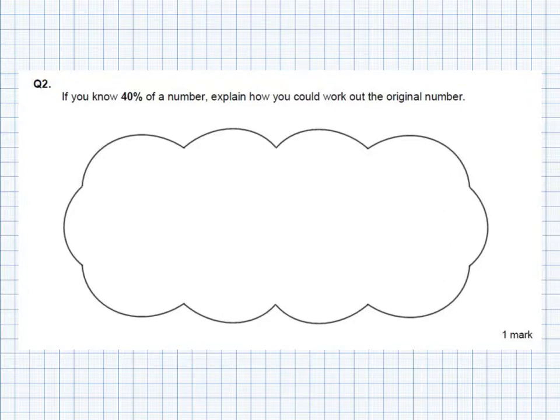The next question is similar in that we have got a missing number. In this case we're not actually having to find the number, we just need to explain how we could work out the original number. Now sometimes when we're trying to explain something what people do is try and use lots of words. But because this is maths we can do our explanations with numbers and with diagrams and with maths facts.